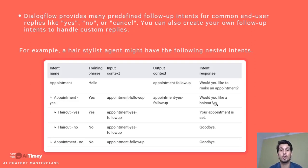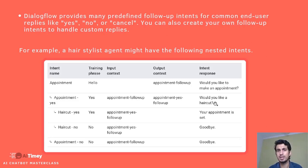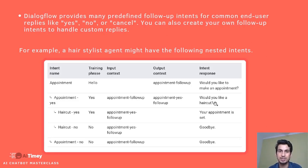Dialogflow provides many pre-made follow-up intents — for example, yes, no, and cancel — because these only make sense in context. If you jump to an assistant and say 'yes' without context, it won't make sense. You must first choose something, then the assistant asks 'would you like to go ahead with this order?' and then 'yes' or 'no' comes as a follow-up intent — that's the right flow.